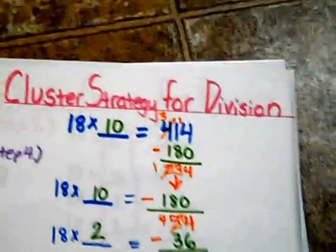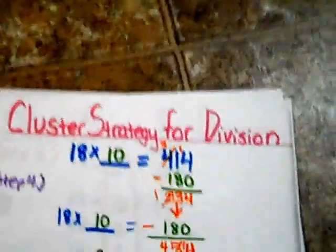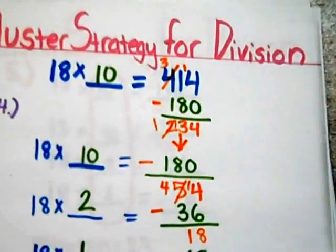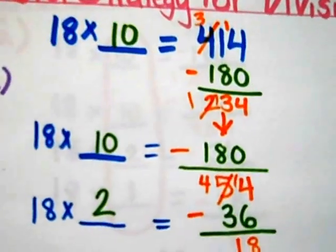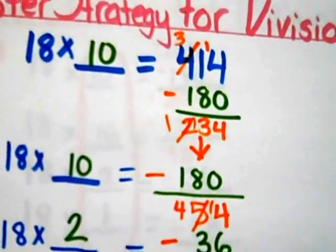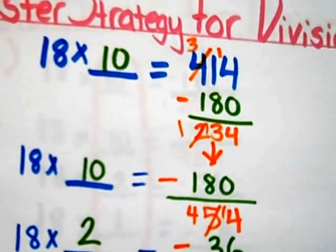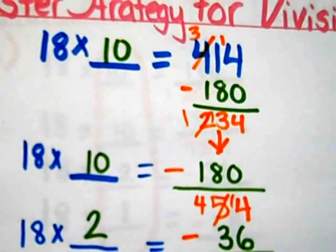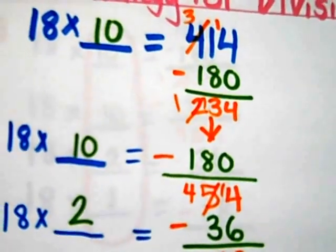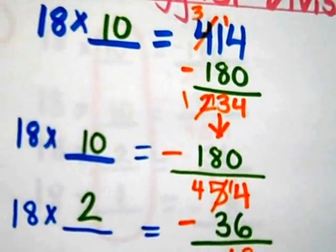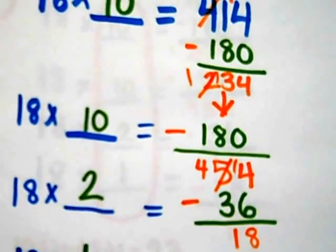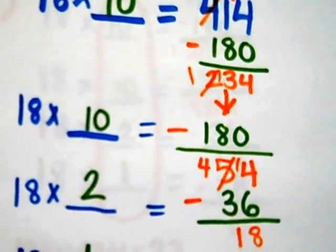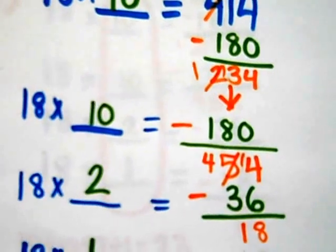180 from 234 gives me 54. That is not in its lowest form. I choose 2. 18 times 2 gives me 36. 36 from 54 gives me 18. I also know that I can continue on. This is not the lowest form.